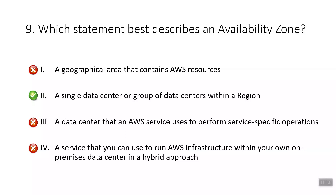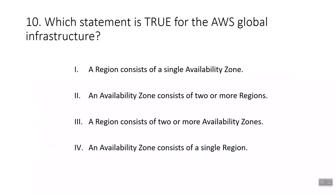The tenth question: which statement is true for the AWS global infrastructure? The correct answer is a region consists of two or more availability zones.